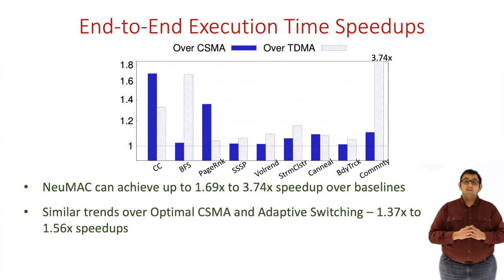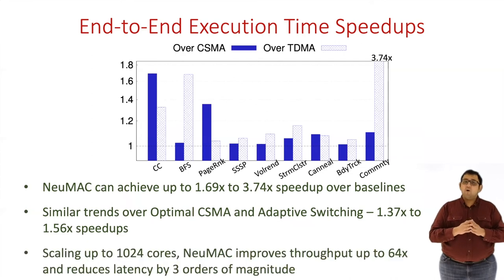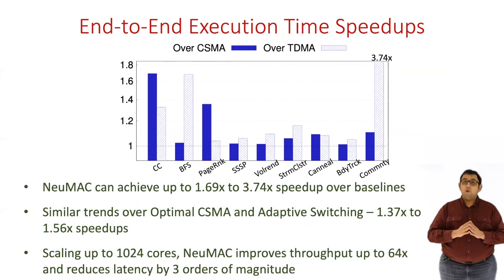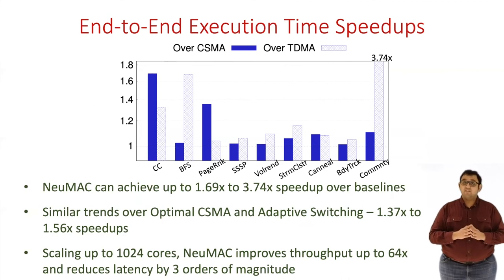Lastly, we test how newMAC's gains scale with the number of cores. We observe that at 1024 cores, newMAC can achieve up to 64 times higher throughput and up to three orders of magnitude lower latencies. In addition, we also present results in the paper showing newMAC's performance with packet losses in the NOC, qualitative results for the protocols learned by newMAC, and more.